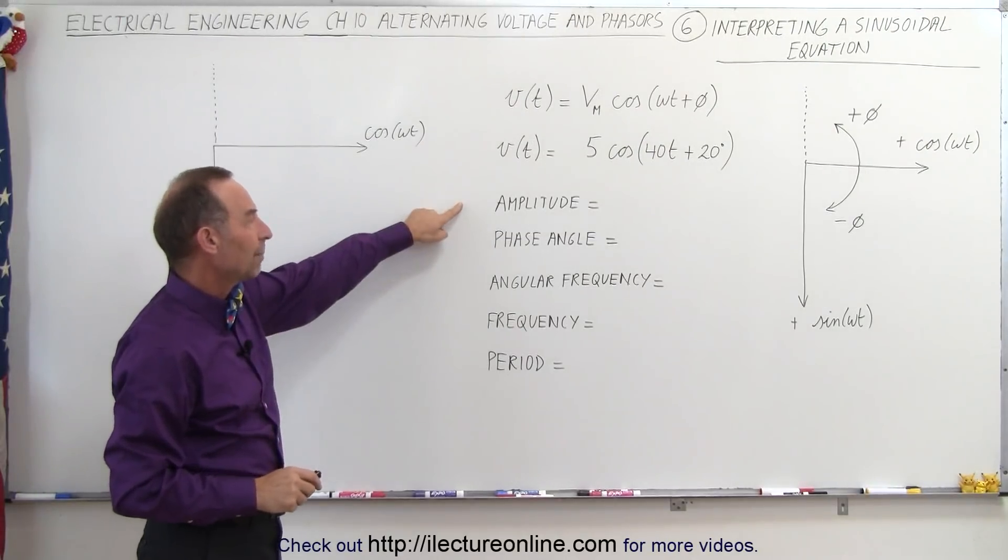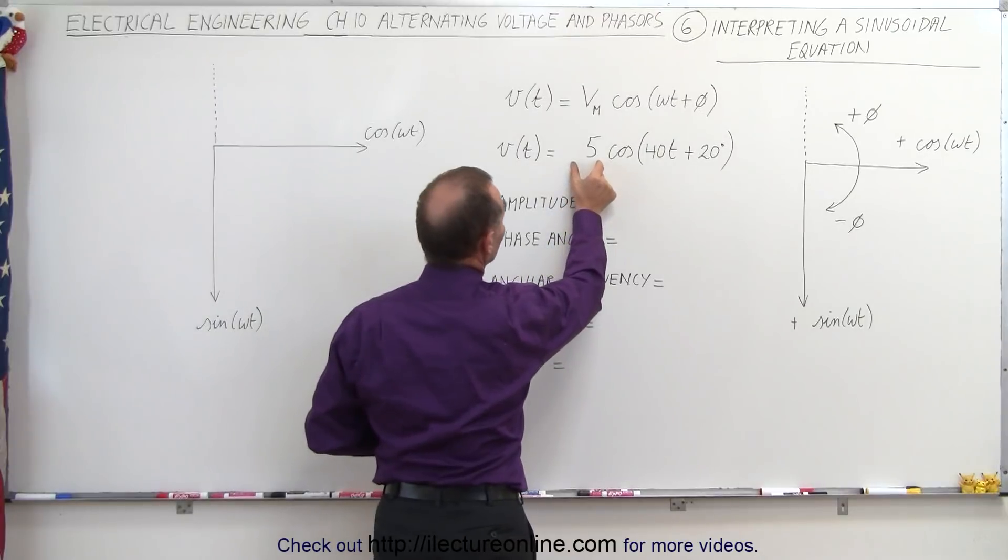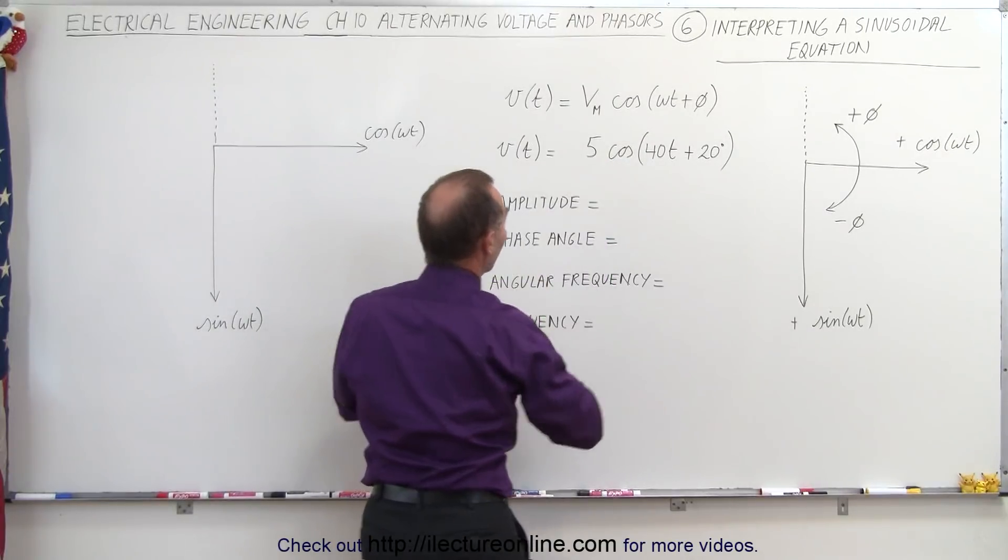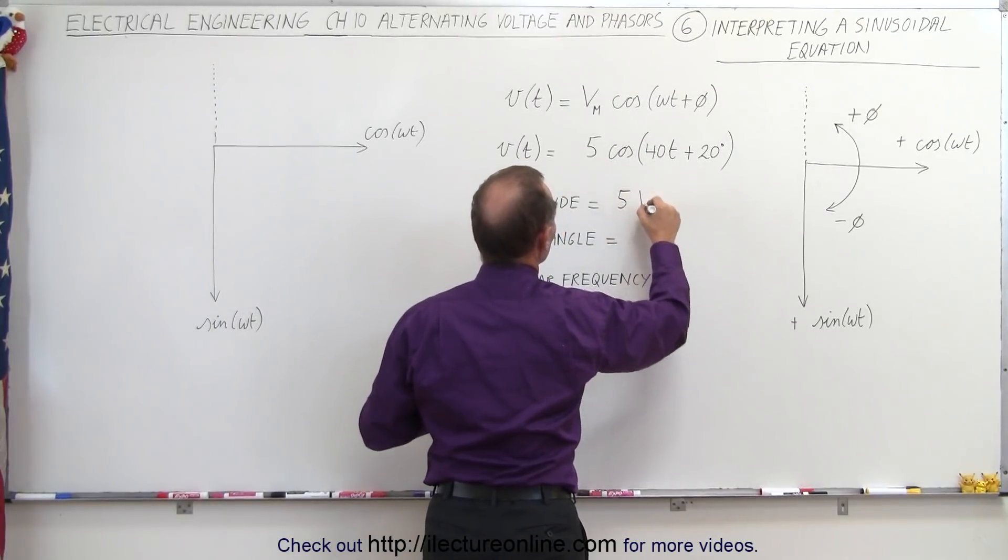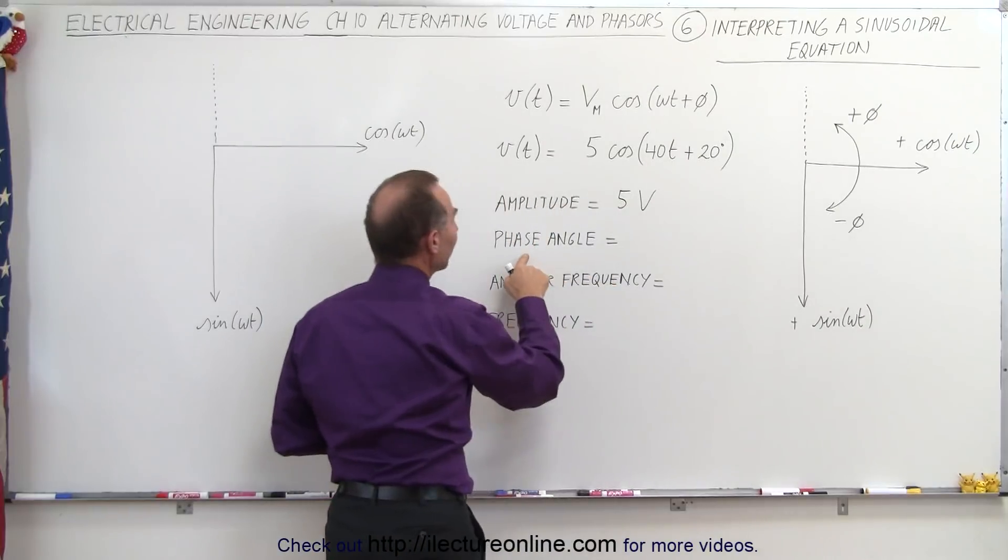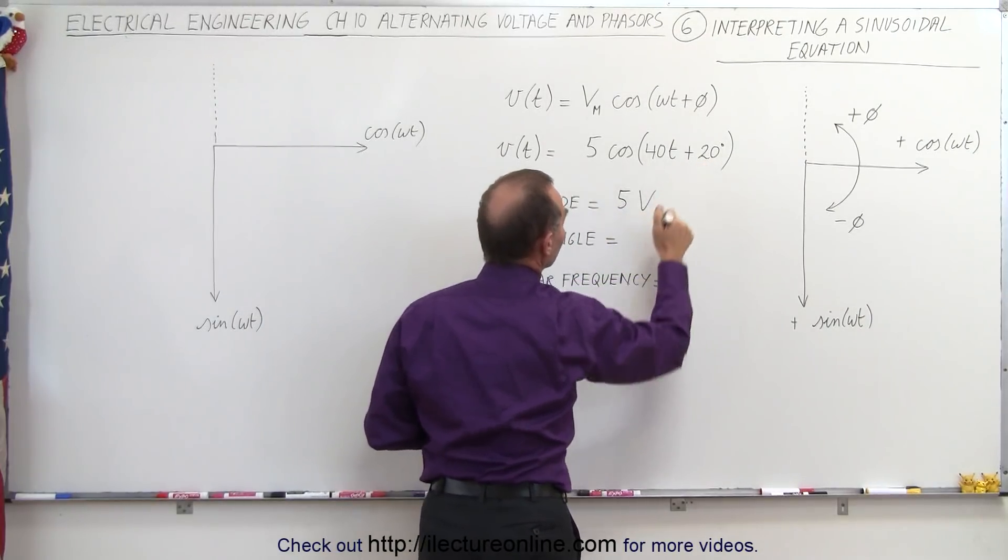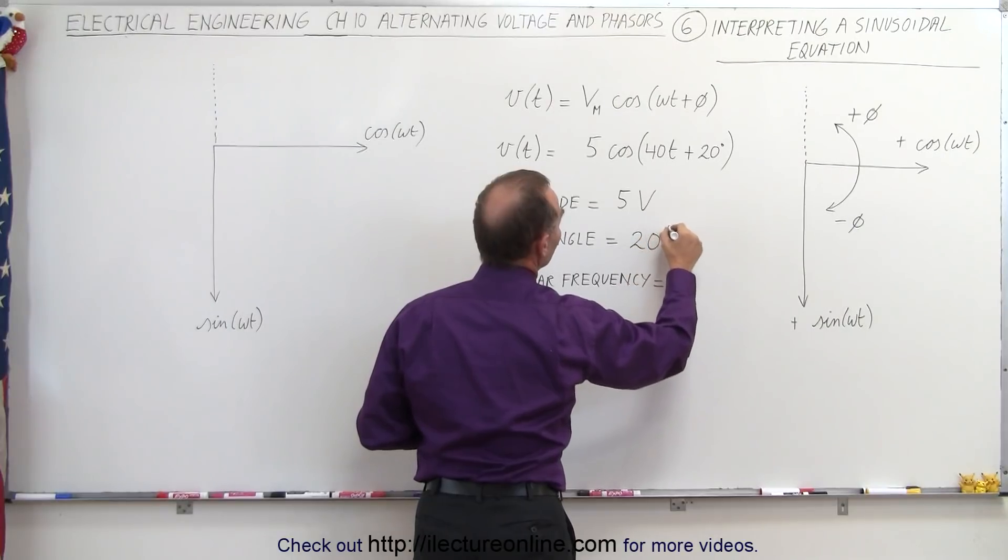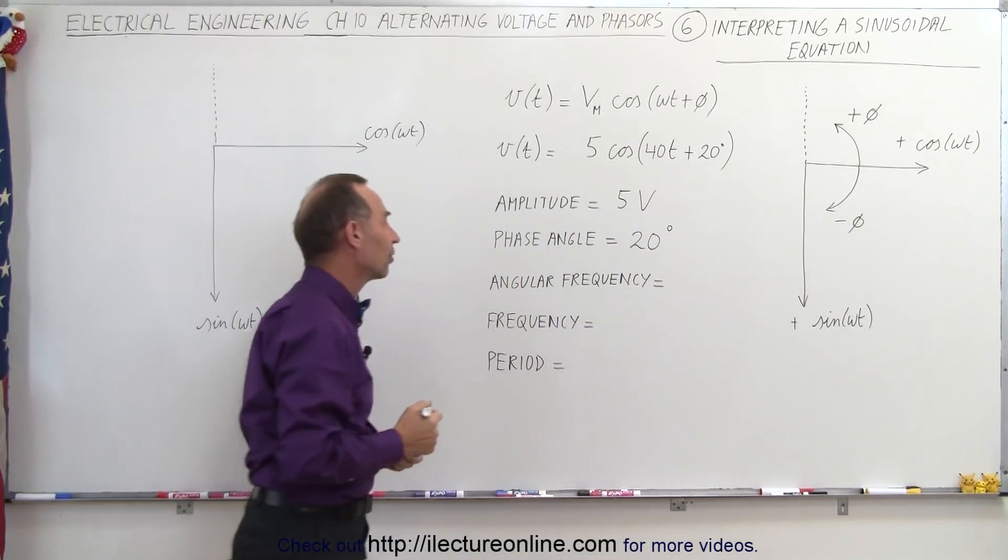So first of all, the amplitude. Well the amplitude is the number from the function right here, so it would be 5 volts, and yes, the units are volts. The phase angle here is going to be plus 20 degrees, so it would be 20 degrees, and the units there is degrees indeed.